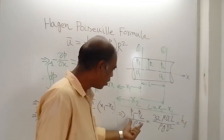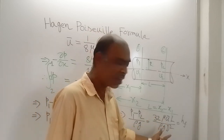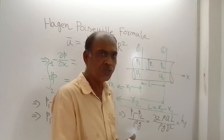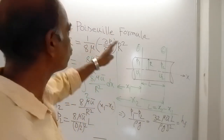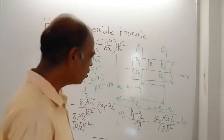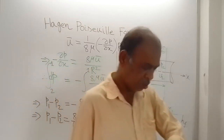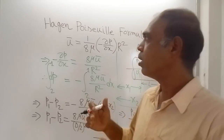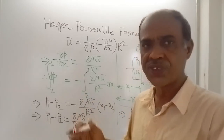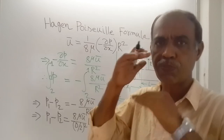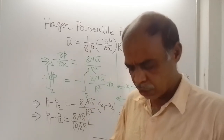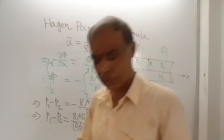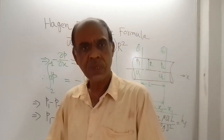This formula — P1 minus P2 divided by ρG equals 32μU_bar L divided by ρG·D² — is called the Hagen-Poiseuille formula. This is the end of the lecture. Just after this video, you will see flow between two parallel plates. Thank you for watching this video. Have a nice day.